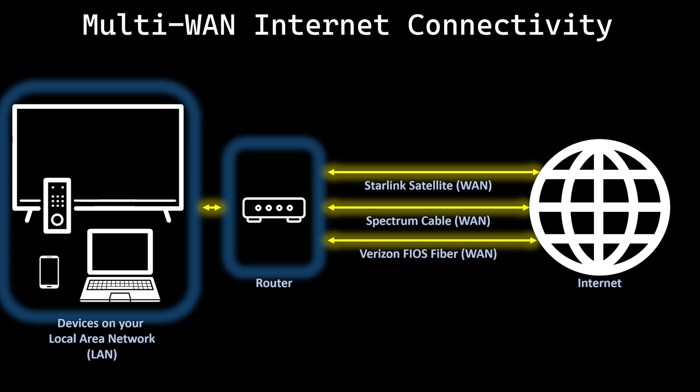WAN stands for Wide Area Network and for the purposes of this presentation it refers to an internet connection. Multi, as you may have guessed, means we're dealing with more than one internet connection. Typically a multi-WAN setup will have between two and four connectivity options. It's usually a good idea to pair a terrestrial option like cable or fiber with a wireless option like cellular or satellite. It's hard to imagine a scenario where you'd have an outage of both cable and satellite — I haven't had one yet.